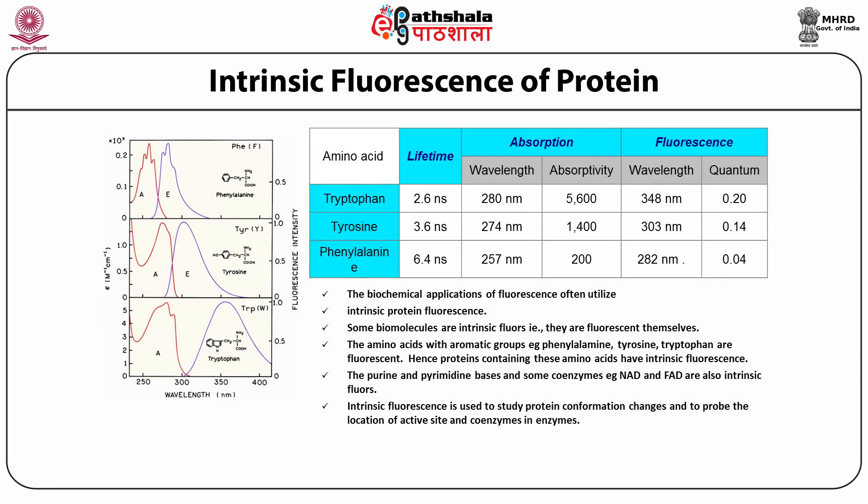You can see the absorption and emission spectra of phenylalanine, tyrosine, and tryptophan. For tryptophan, the excitation wavelength is 280 nm with absorptivity of 5600, fluorescence emission maximum at 348 nm, and quantum yield of 0.2. However, for tyrosine and phenylalanine these values are quite low.